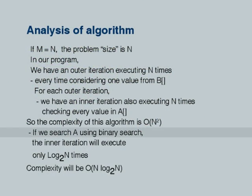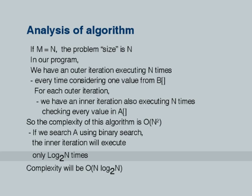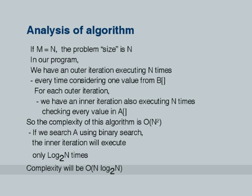Now, suppose I sort array a; then I can use binary search on array a. If we search using binary search, the inner iteration will execute only log₂(n) times instead of n times — a significant reduction. Therefore, the complexity of our algorithm will not be O(n²) but O(n log n). An algorithm of complexity O(n log n) is decidedly much more efficient than an O(n²) algorithm.